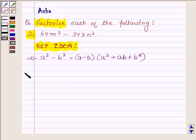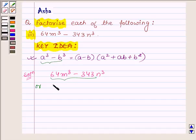Let us now begin with the solution. We have to factorize 64m³ - 343n³. We will write the given equation in the form of a³ - b³. Now 64 can be written as 4³ into m³, and 343 can be written as 7³ into n³.